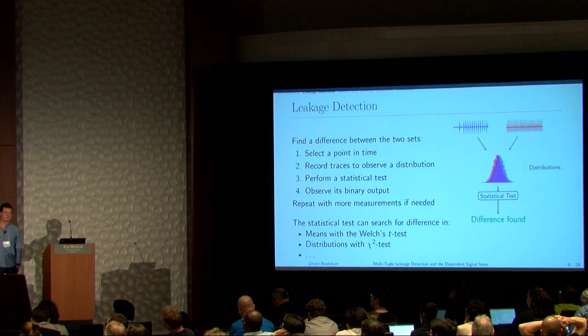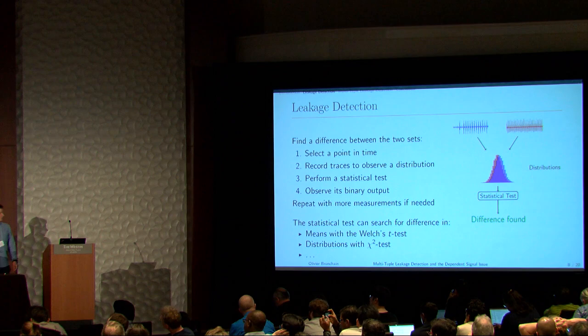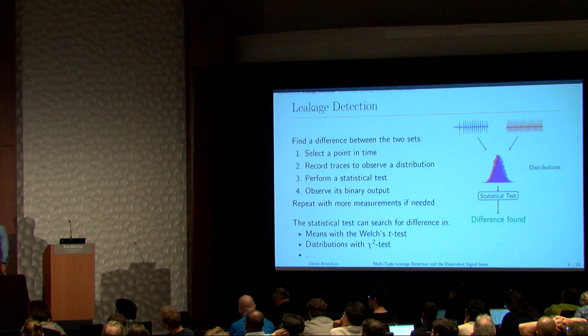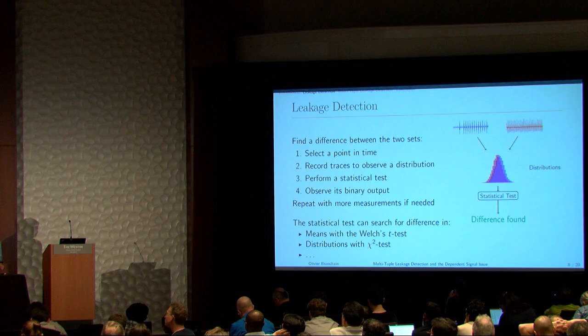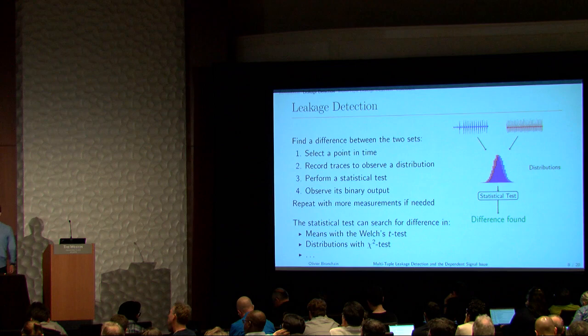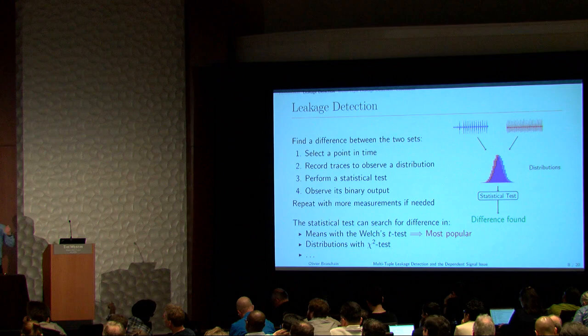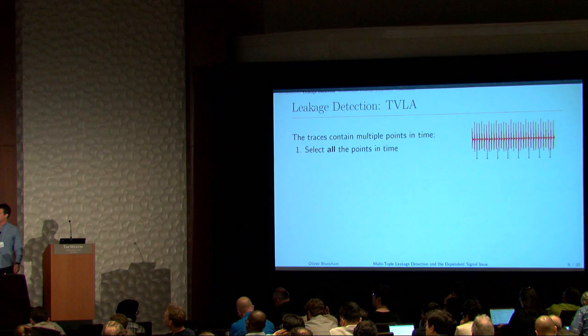The choice of test depends on what you're searching for. If you are searching for different means, you can run the Welch T-test. If you are searching for differences in distribution, you can use the chi-square test, proposed last year at CHES. The most used test is the Welch T-test, used in the TVLA procedure.